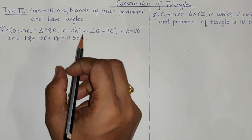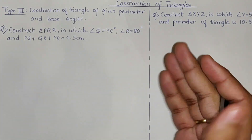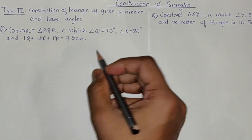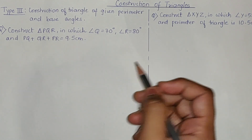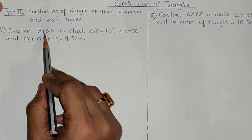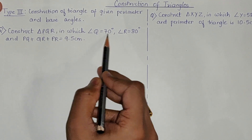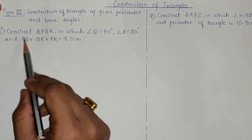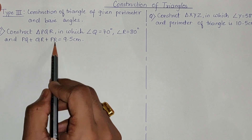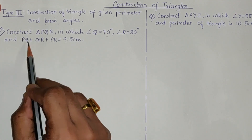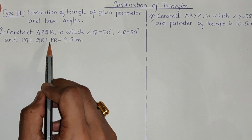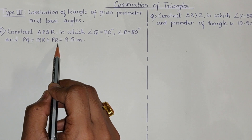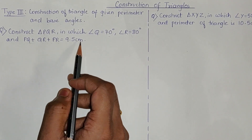In this type of question, you will be given the perimeter and the base angles of the triangle. We are going to solve two questions. The first question is: construct triangle PQR in which angle Q is equal to 70 degrees, angle R is equal to 80 degrees, and the perimeter PQ + QR + PR is equal to 9.5 cm. This sum of all sides is the perimeter.